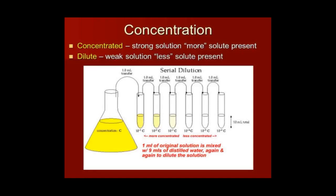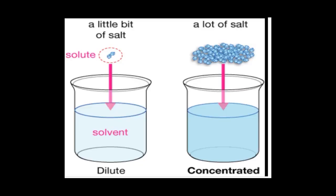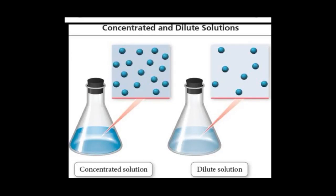We can divide solutions on the basis of concentration — that is, the amount of solute. There are two types: if solute particles are more in number, they will be called a concentrated solution. And if the solute particles are less in number, it will be called a dilute solution. You can see in this diagram that the amount of solvent is equal in both, but the amount of solute changes. A little bit of salt means it is a dilute solution; a lot of salt means it is concentrated.